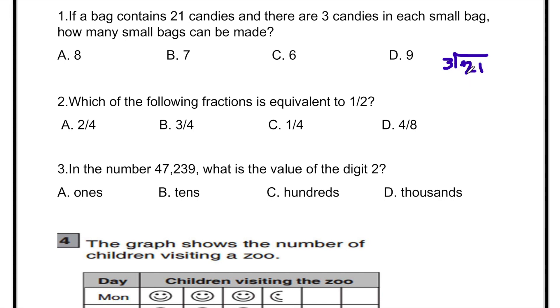Does 21 come in 3's table? 3 ones are 3, 3 twos are 6, 3 threes are 9, 3 fours are 12, 3 fives are 15, 3 sixes are 18, 3 sevens are 21.